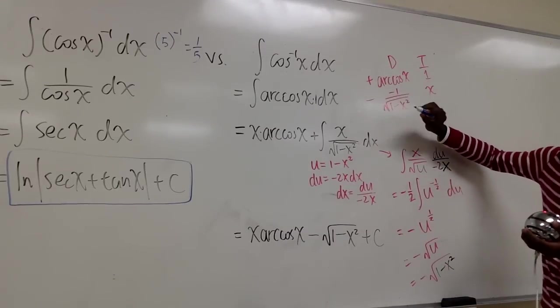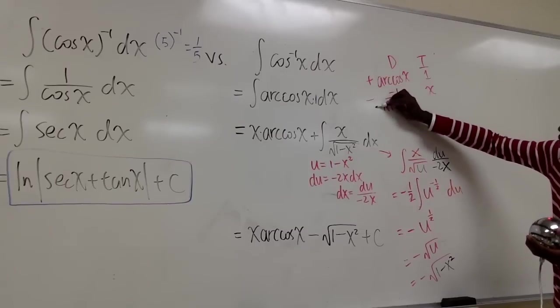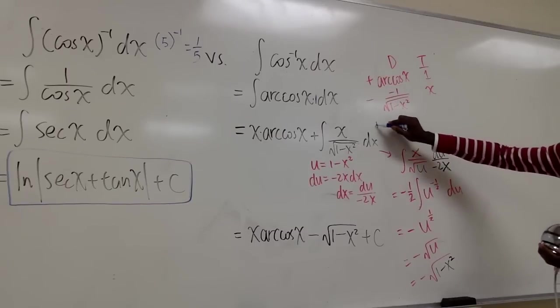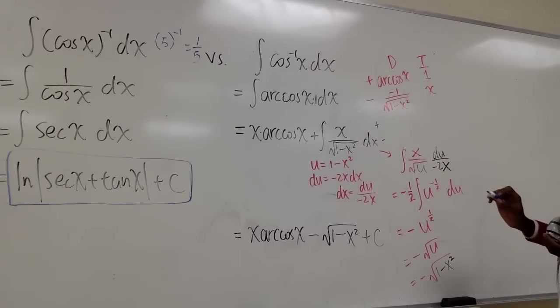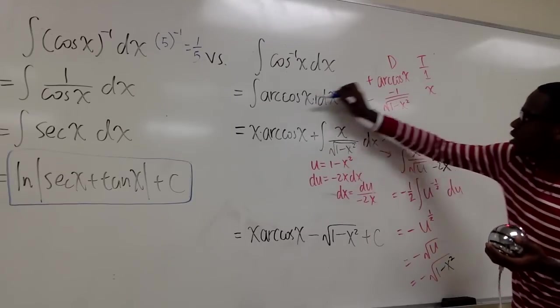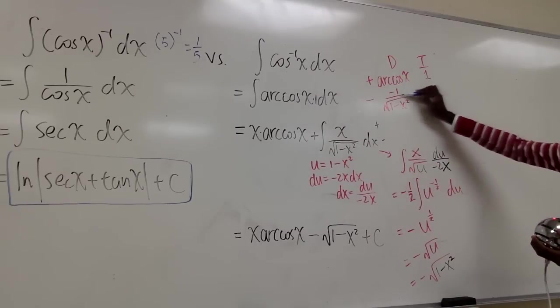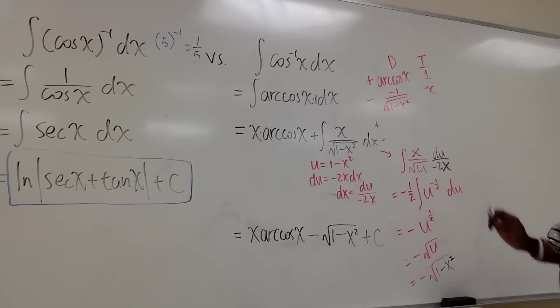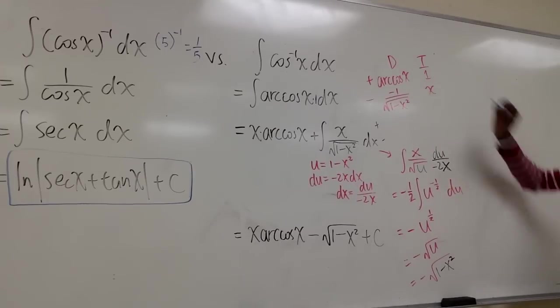And notice how the sign is alternating: plus, minus, plus, minus. So we have arc cosine. We take the derivative of that. We have negative 1 over radical 1 minus x squared. And then the integral of 1 is x.